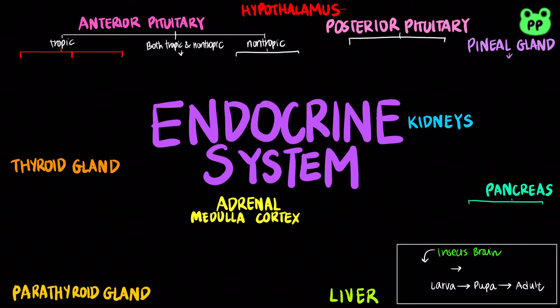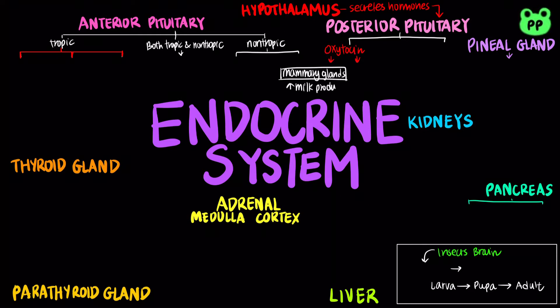All the hormones have been color-coded by the glands or organs that secrete them. The hypothalamus receives information from the nervous system and initiates responses through the endocrine system. The posterior pituitary stores and secretes hormones that are made in the hypothalamus, including oxytocin, which triggers the mammary glands to produce milk and stimulates the uterus to contract through a positive feedback loop during labor.